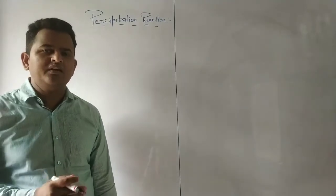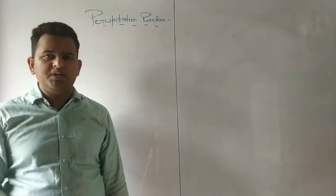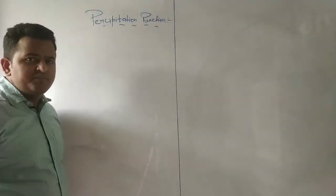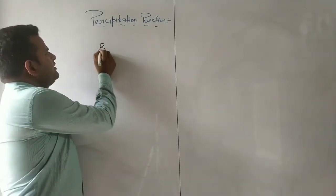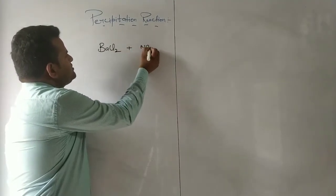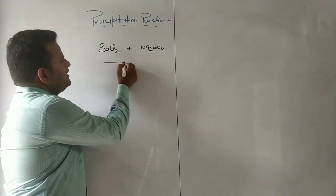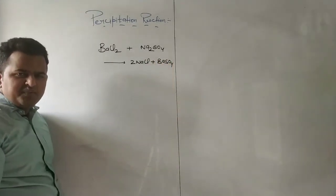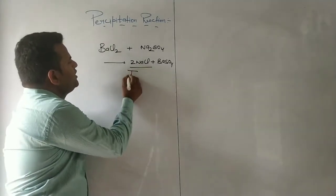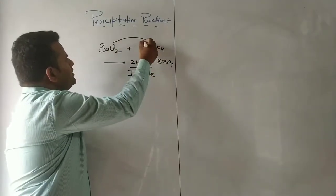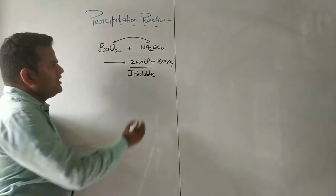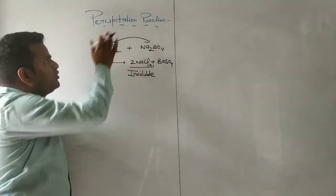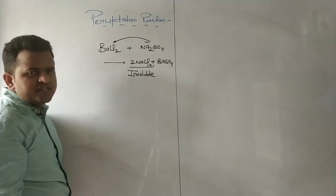All precipitation reactions are also double displacement reactions. For example, we have barium chloride plus sodium sulfate (Na₂SO₄). When we mix these two solutions, we get an insoluble compound that solidifies in the solution — we call it a precipitation reaction. All double displacement reactions are precipitation reactions.